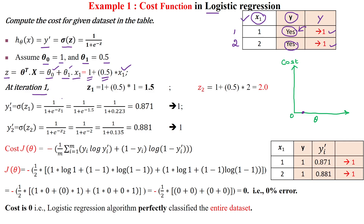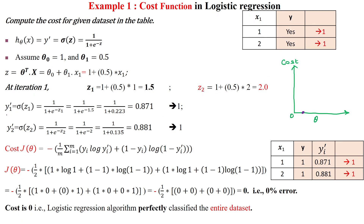At iteration number 1, g1 — the function g for sample number 1 — is calculated by substituting the x value which is 1, giving us 1.5. Similarly, g2 for sample number 2 is calculated as 1 plus the x1 value of 2, giving us 2. Now we apply the sigmoid function over g1: 1 over 1 plus e to the power of minus g1, where g1 is 1.5.